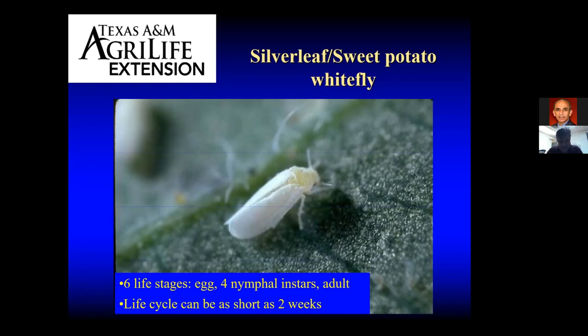Basically, this insect has six life stages: an egg, four nymphal instars, and of course the adult stage. When we're trying to control this insect, we are targeting primarily the adults, but in some cases we are trying to get insecticides on those nymphs to kill them. The best way to do that is with something systemic that would move through the tomato plant and kill that nymphal instar. These guys can really reproduce quickly if conditions are right.